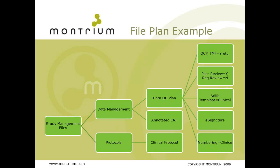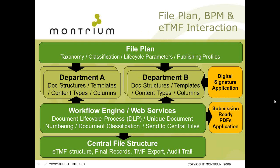A simple example: for a zone called Study Management Files, broken into sections such as Data Management and Protocols, you'd have document types like Data QC Plan and Annotated CRF. For the Data QC Plan, attributes might specify peer review required: yes, regulatory review required: no, e-signatures required, and a numbering format following the clinical template. How do the file plan, business process management, and ETMF interact? The file plan is where taxonomies, document classification, lifecycle parameters, and publishing profiles are defined centrally.